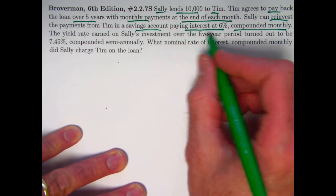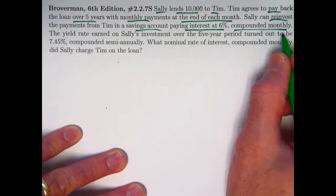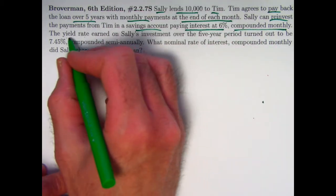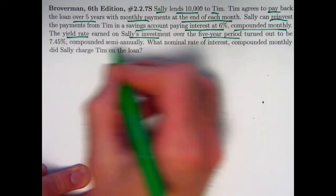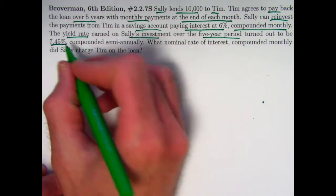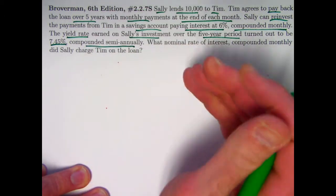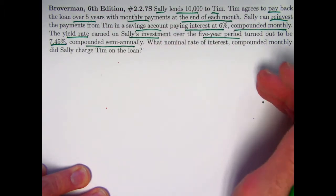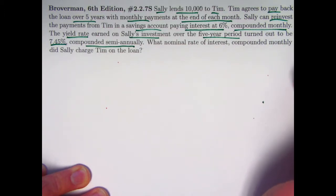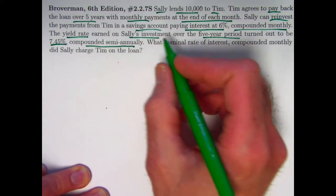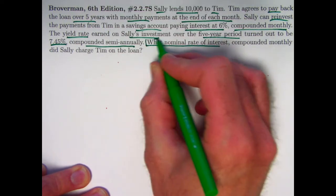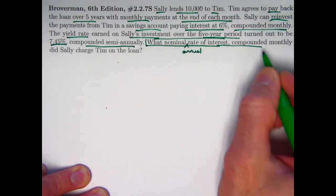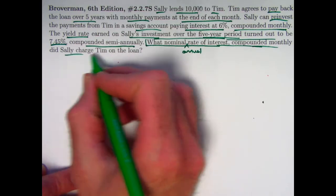Sally can reinvest payments into a savings account paying interest at 6% compounded monthly. This doesn't explicitly say it's annual, but because they say compounded monthly, the assumption is that 6% is a nominal annual interest rate compounded monthly. The yield rate on Sally's investment over the five-year period is described as earning 7.45% interest compounded semi-annually. The goal is to find the nominal rate of interest compounded monthly — an annual rate — that Sally charged Tim on the loan.